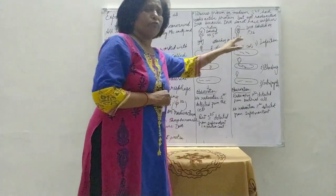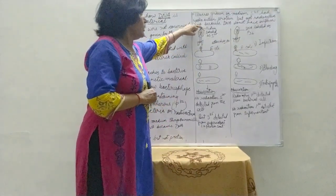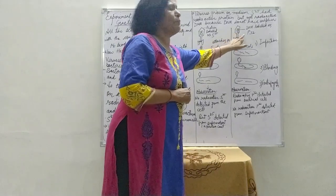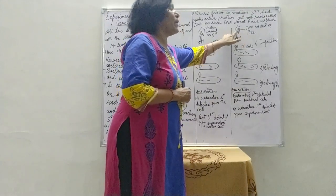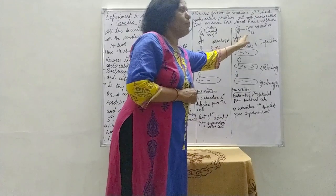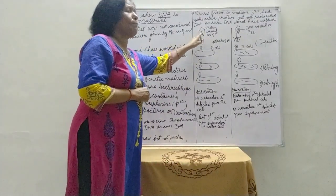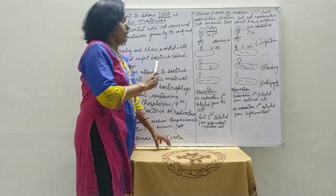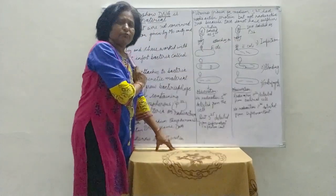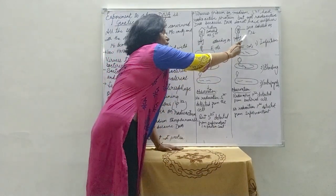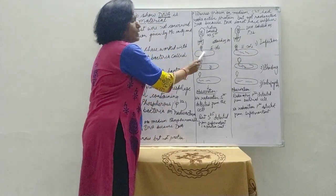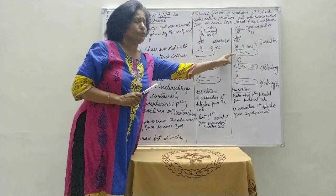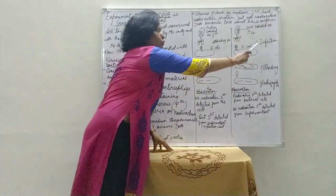They obtained two types of bacteriophages: one with protein labeled as S35, and another with DNA labeled as P32. Because phosphorus is a part of DNA, it easily incorporates into DNA, hence labeled P32. But S35 is not part of DNA — it is part of protein — so it incorporates into the protein coat. They then cultured both bacteriophages labeled S35 and P32 on E. coli, allowing them to infect the bacteria.